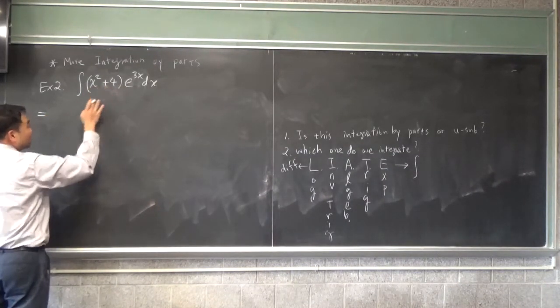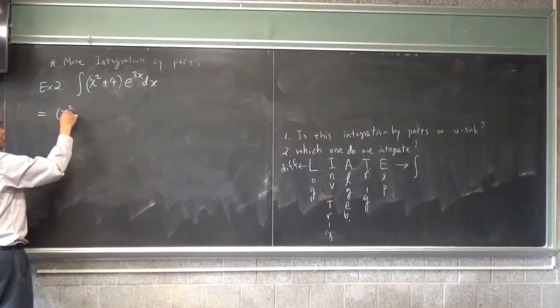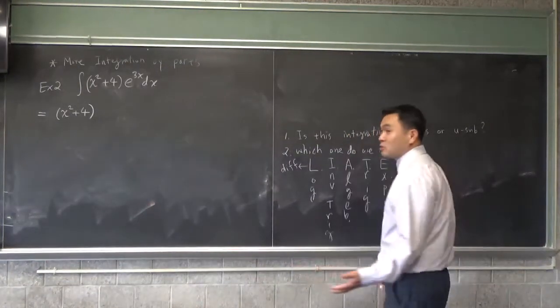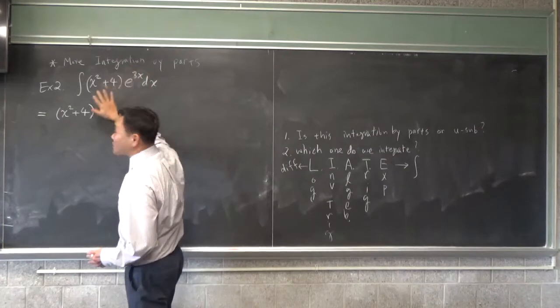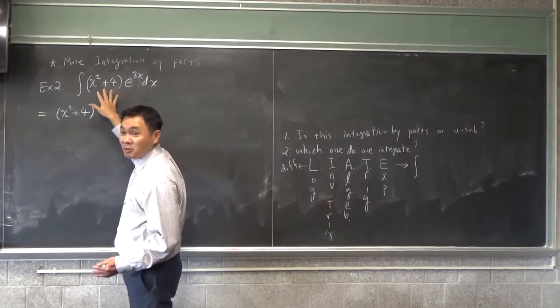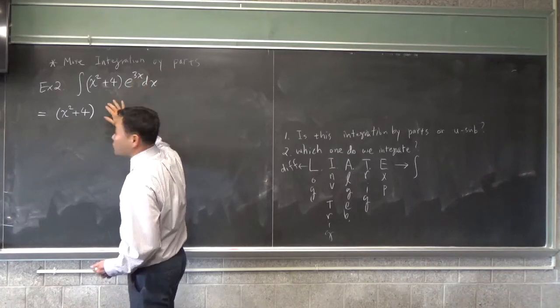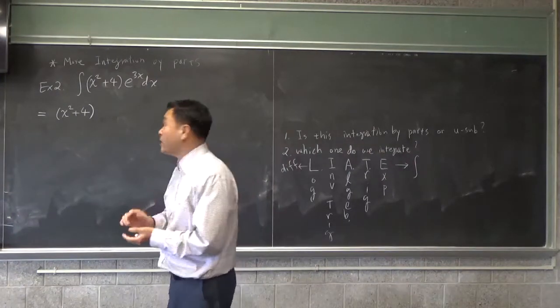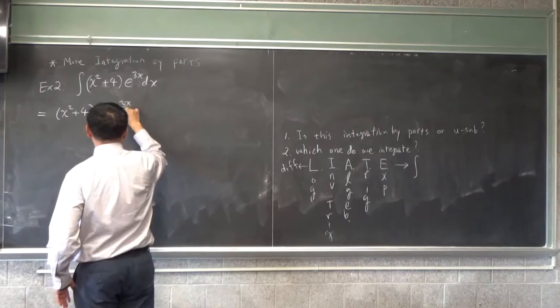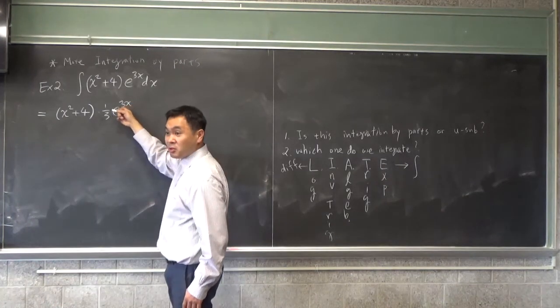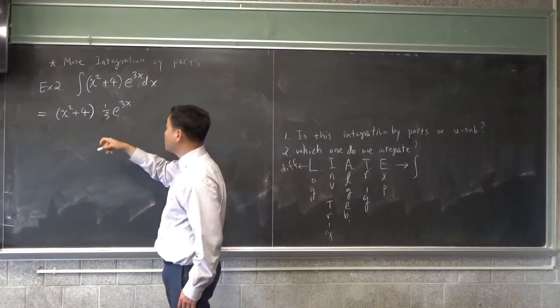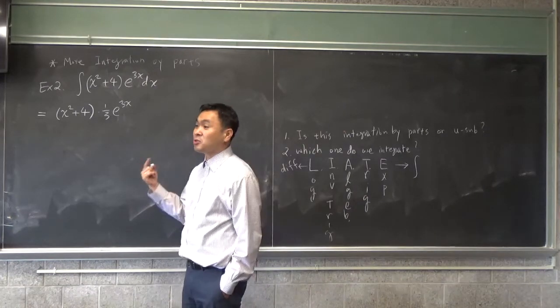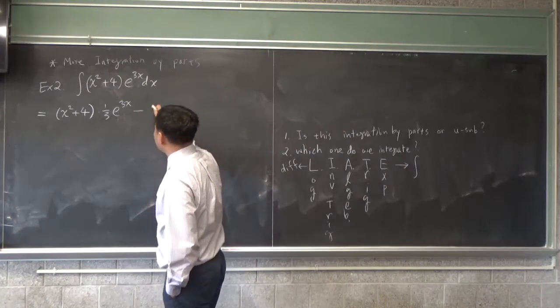The one that you should differentiate later first comes down without any change. And we have to integrate the e to 3x. After all, what is integration by parts? You're only choosing one part and integrating that one only, right? That's what integration by parts means. So we're integrating e to 3x. What's the anti-derivative of e to the 3x? Yes, one-third e to the 3x.